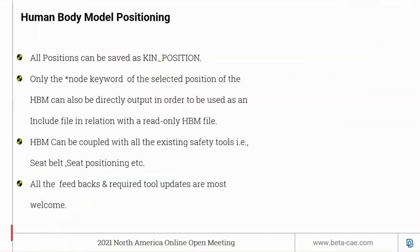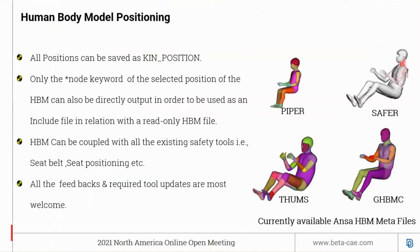Using the articulation tool, all positions can be saved as kinematic positions and the user can export node keywords to use as an include for read-only HBM files. All existing safety tools like seat belt positioning can be coupled with HBM. Currently ANSA supports the THUMS, SAFER, and Global Human Body models.